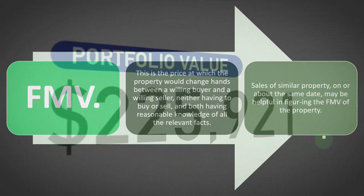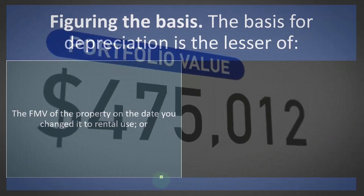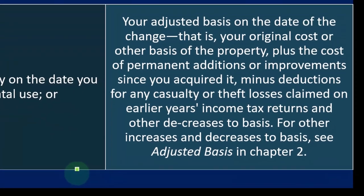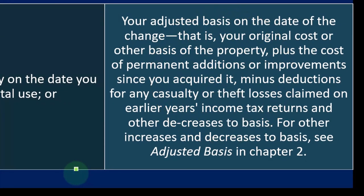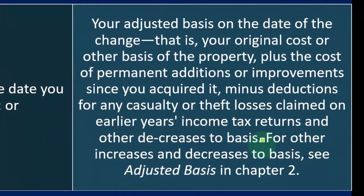Sale of similar property on or about the same date may help figure the fair market value of the property. The basis for depreciation is the lesser of the fair market value on the date you changed it to rental use, or your adjusted basis on that date — that is, your original cost plus the cost of permanent additions or improvements since you acquired it, minus deductions for any casualty or theft losses claimed on earlier income tax returns and other decreases to basis.